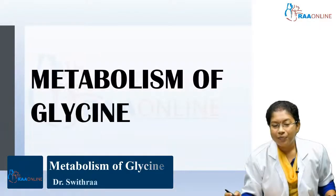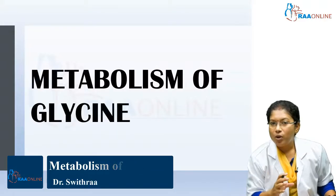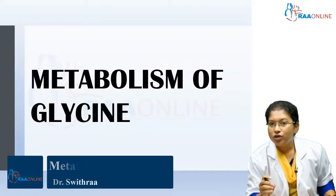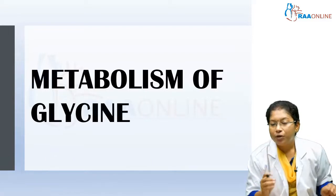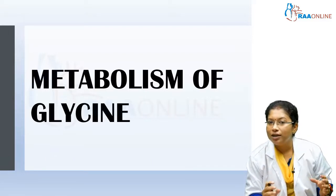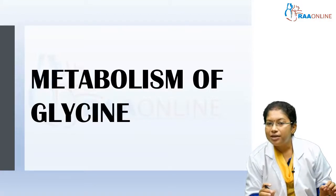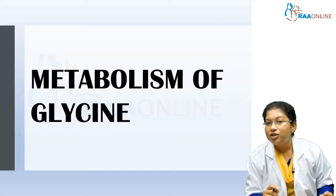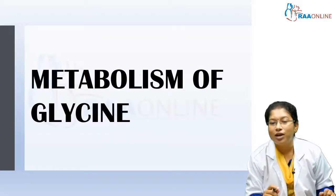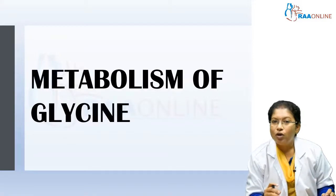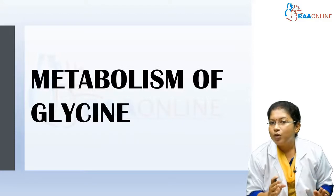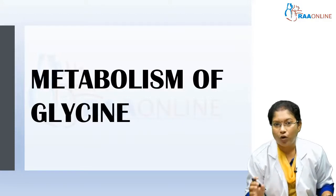Hello Raw Online Learners. We have seen amino acid chemistry, protein structure, and the organization of proteins. From this session onwards, we are going to start the metabolism of amino acids. The simplest amino acid in our body is glycine, so today's class covers the metabolism of glycine, and the second simple amino acid is alanine. We will see the metabolism one by one from today onwards.